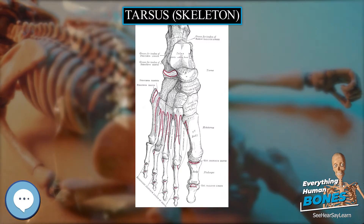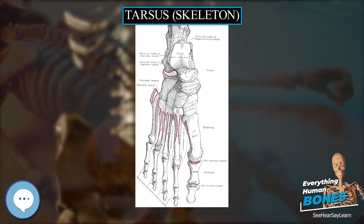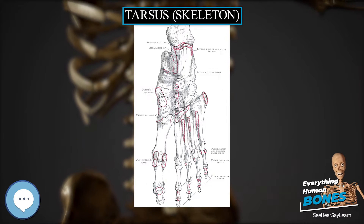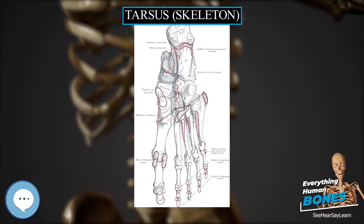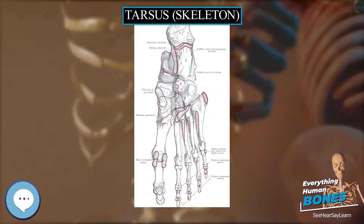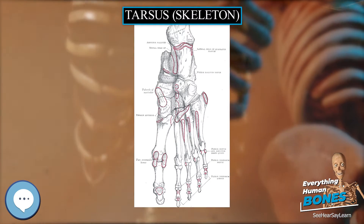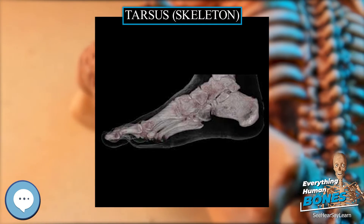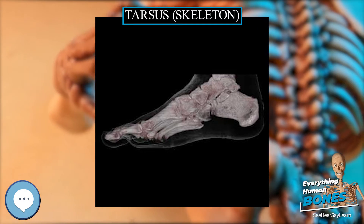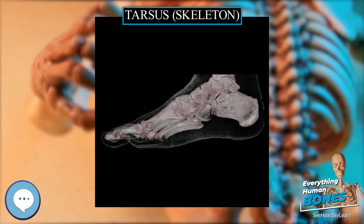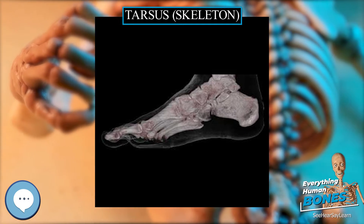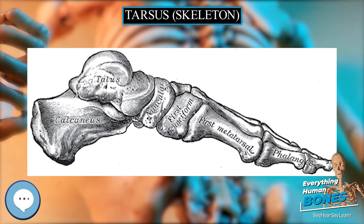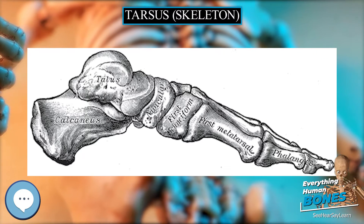The tarsus articulates with the bones of the metatarsus, which in turn articulate with the proximal phalanges of the toes. The joint between the tibia and fibula above and the tarsus below is referred to as the ankle joint. In humans, the largest bone in the tarsus is the calcaneus, which is the weight-bearing bone within the heel of the foot.